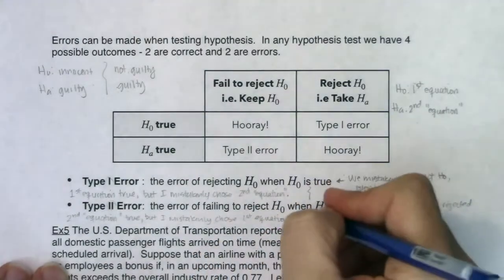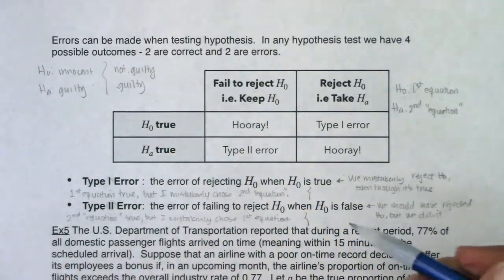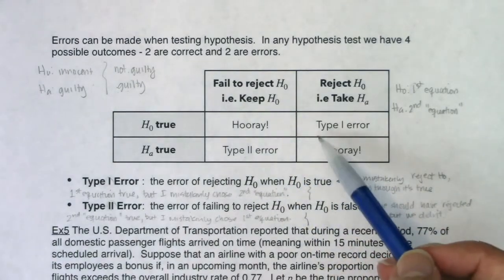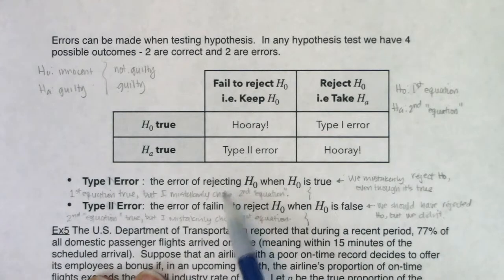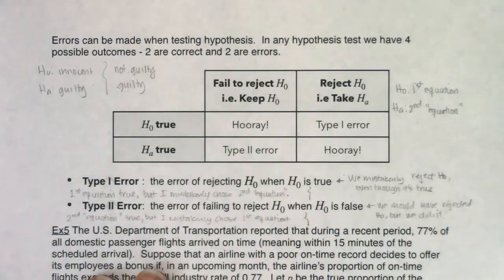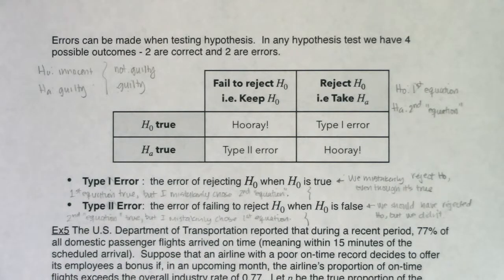This doesn't help everybody — some students say it makes it more confusing, in which case use the chart. That's how I did it in college, but find a way that works for you. It doesn't have to be the way I did it. Now let's look through Example 5: figure out what land we're in, find our null and alternate, then identify the Type 1 and Type 2 errors.